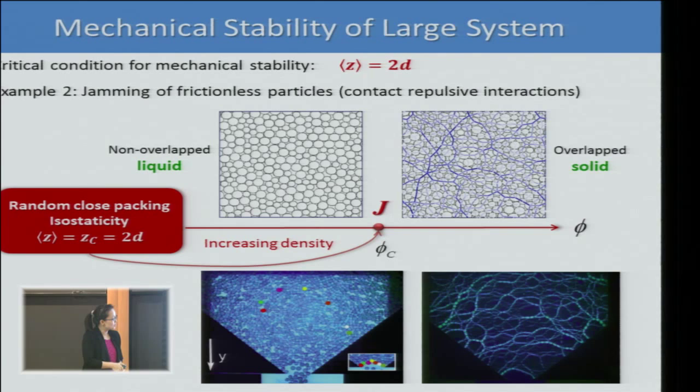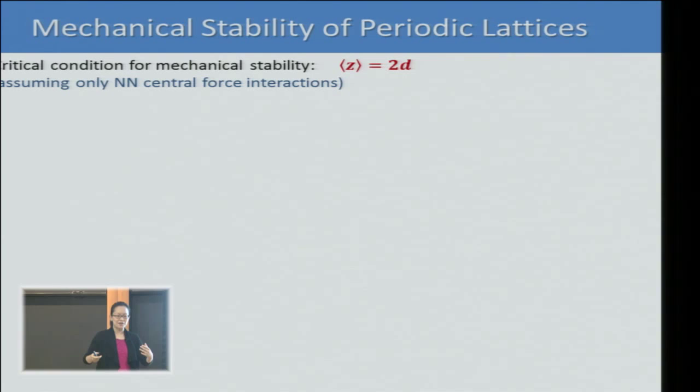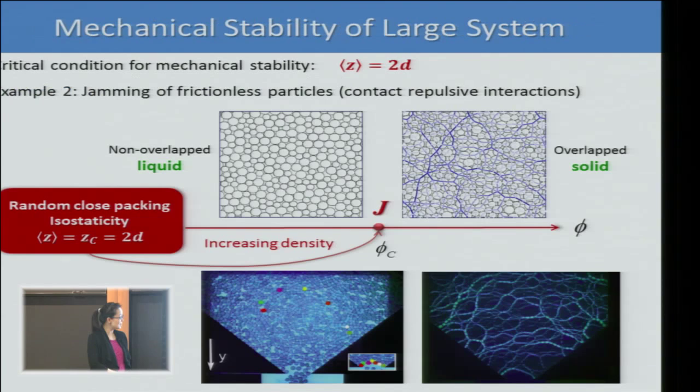These two states correspond to the unjammed and jammed states seen at the beginning. In Behringer's experiment there is friction, so it's not an exact correspondence — I'm just showing the simple concept of jamming and unjamming.